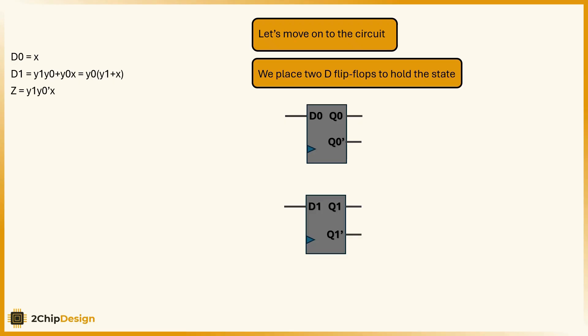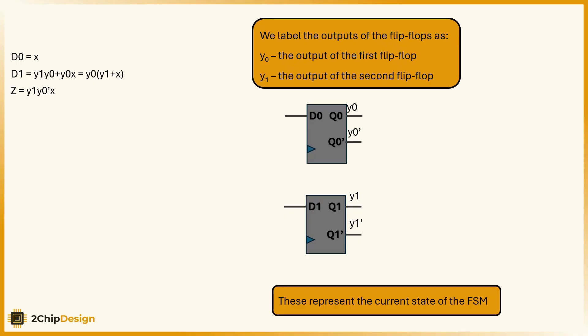Let's move on to the circuit. We place two D flip-flops to hold the state. We label the outputs of the flip-flops as y0, the output of the first flip-flop, y1, the output of the second flip-flop. This represents the current state of the FSM.